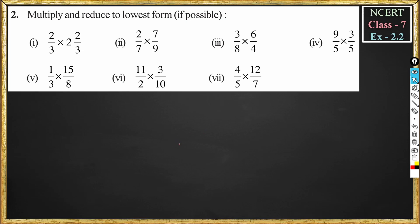Class 7 Maths, Chapter 2, Exercise 2.2, Question number 2. The question says multiply and reduce to lowest form if possible. In the question, it is given two fractions. We should multiply these two fractions and then try to reduce it to the lowest form if possible.